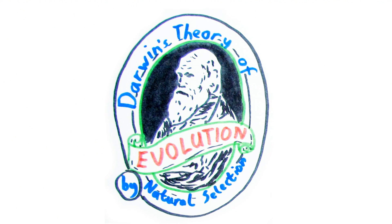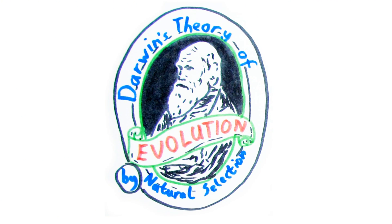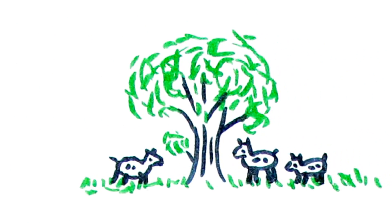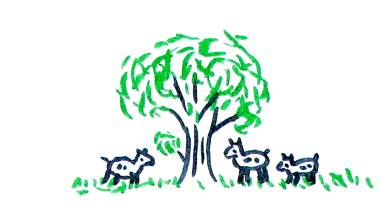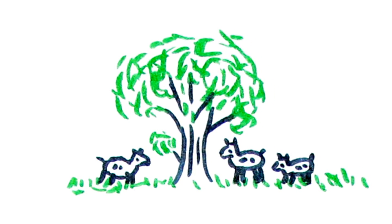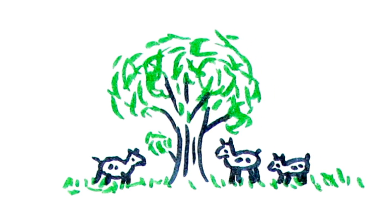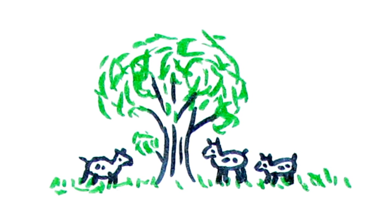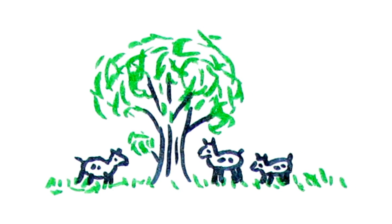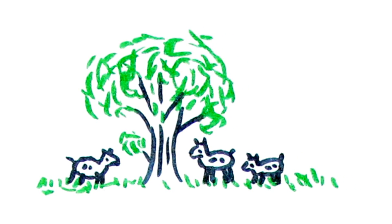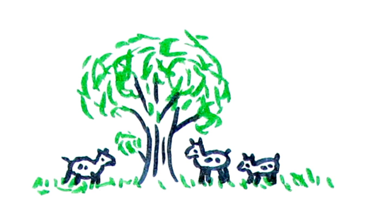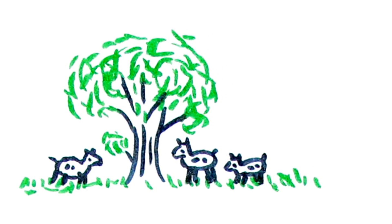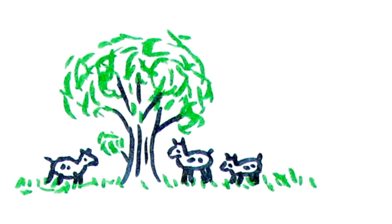Darwin's theory of evolution by natural selection works like this. Due to natural mutation from generation to generation, individuals within a species may show a wide range of variation. If we look at one property, for example, such as height, from a group of siblings all born at the same time, you may get a range of different heights. This is variation.